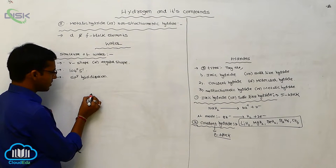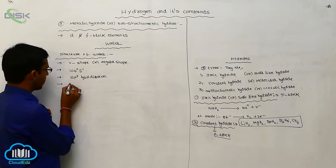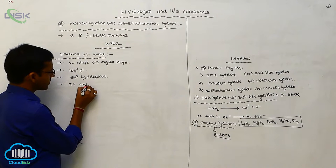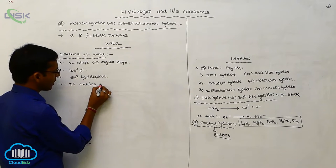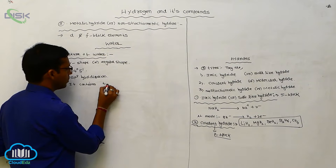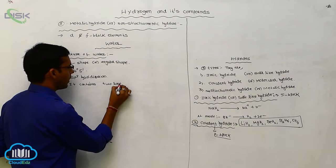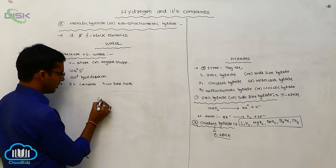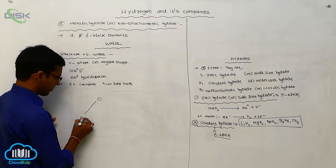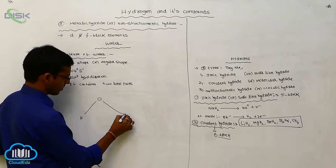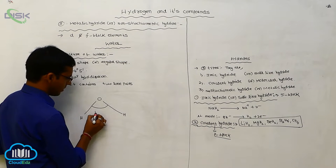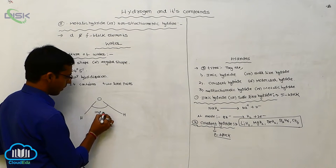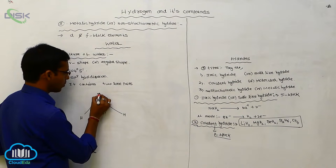The structure of water, it contains two lone pairs of electrons. This is a structure, its angle is 104 degrees 5 minutes. It contains two lone pairs.